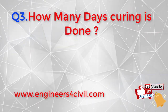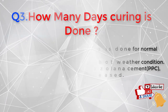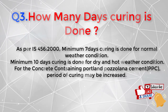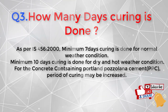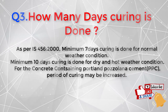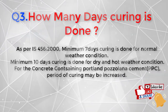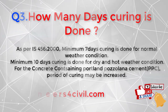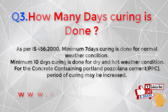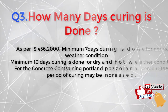The third question is: how many days is curing done? As per IS 456, a minimum of seven days curing is done for normal weather conditions, and a minimum of ten days curing is done for dry and hot weather conditions. For concrete containing Portland Pozzolana Cement (PPC), the period of curing may be increased.